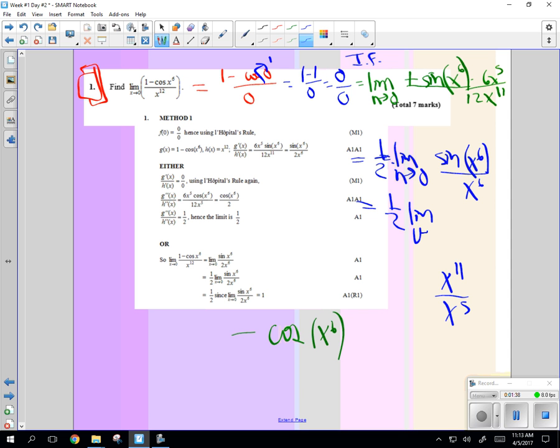as u goes to 0, sine u over u. What is that? That's 1. So it's 1 half times 1, which is 1 half.